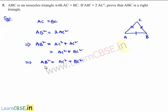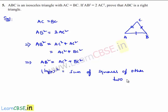This shows that AB square, which is the hypotenuse square, is equal to the sum of squares of the other two sides. So we can say that the given triangle ABC is a right angle triangle.